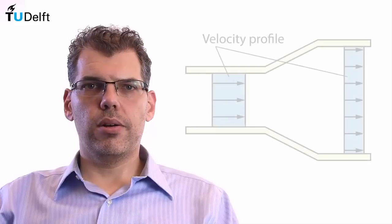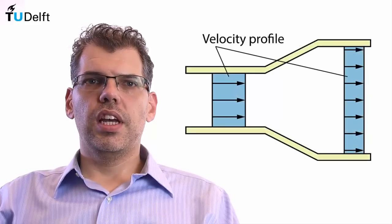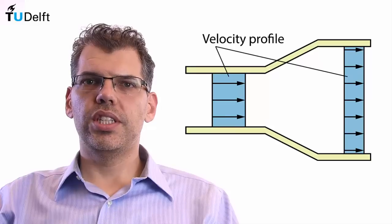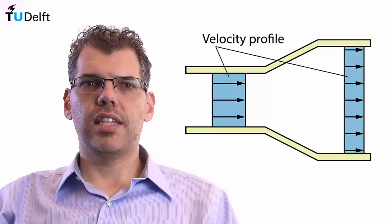This is analogous to a constant flow rate through a variable section pipe. If the pipe cross section increases the velocity of the fluid decreases to maintain the same flow rate.